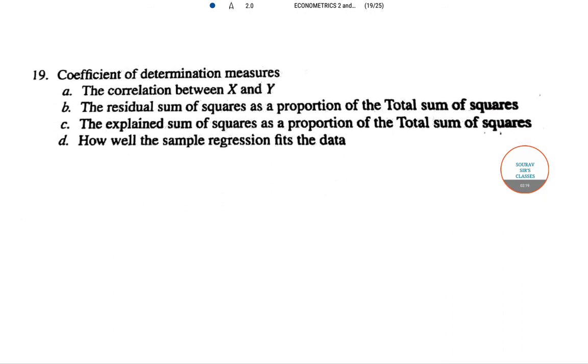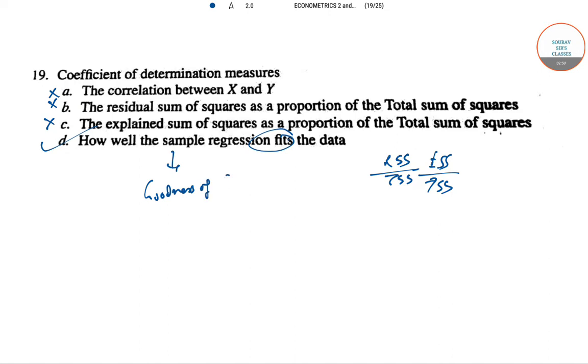Question 19 is on coefficient of determination. What does it measure? Correlation between X and Y is measured by the correlation coefficient, so that's wrong. RSS/TSS is part of the F test, also wrong. ESS/TSS is also part of this, wrong. How well the sample regression fits the data - yes, the goodness of fit. That is measured by the coefficient of determination.